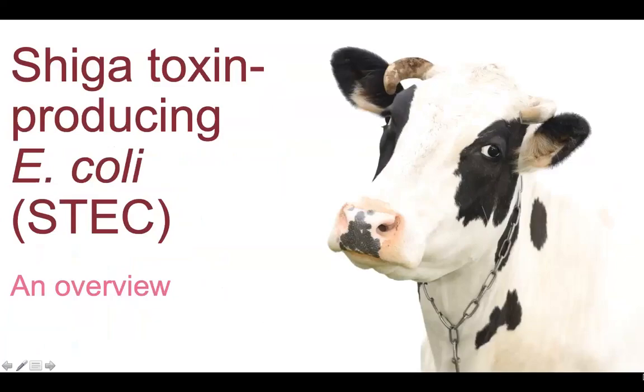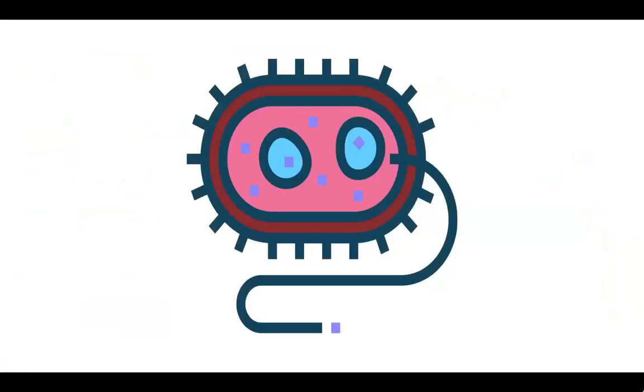This video introduces the bacterial infection Shiga toxin-producing E. coli. Symptoms of STEC vary from person to person but often include severe stomach cramps, diarrhea which can be bloody, and vomiting. If there is fever, it's not usually very high. Most people get better within five to seven days. Some infections are very mild, but others are severe or even life-threatening.